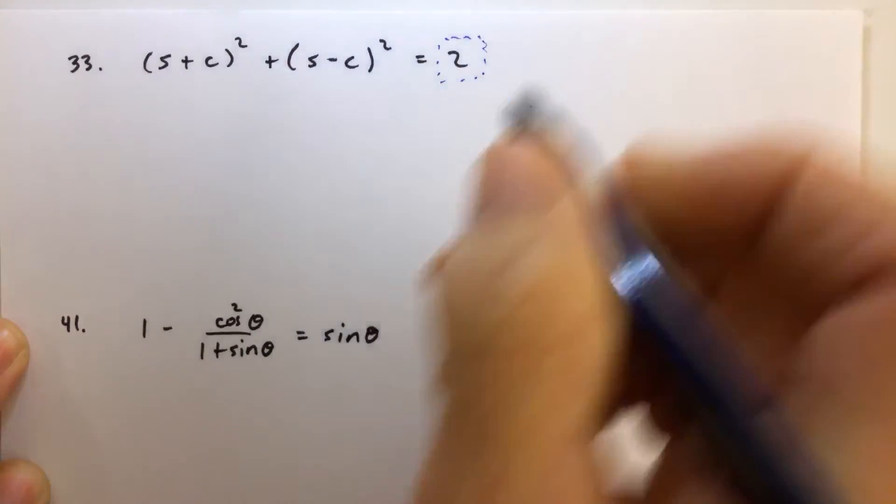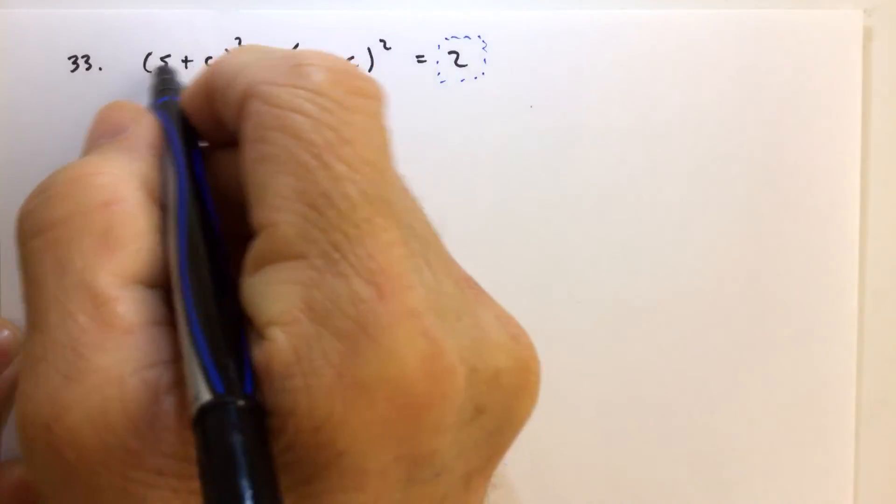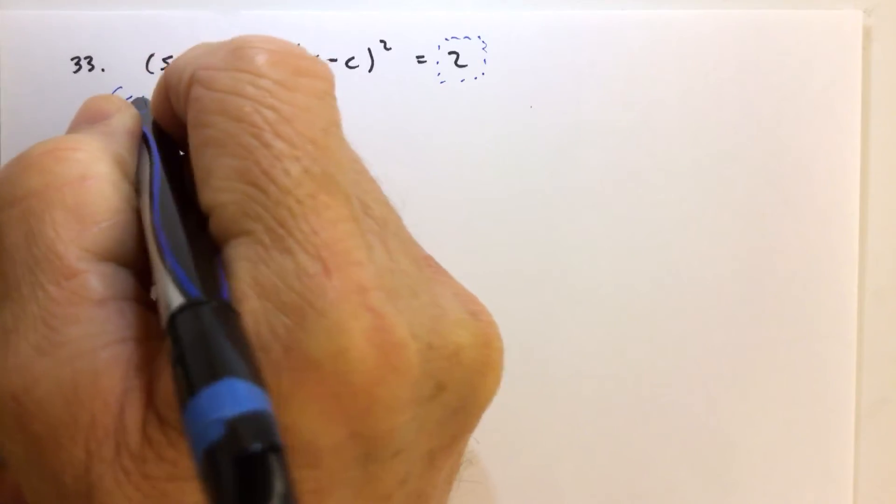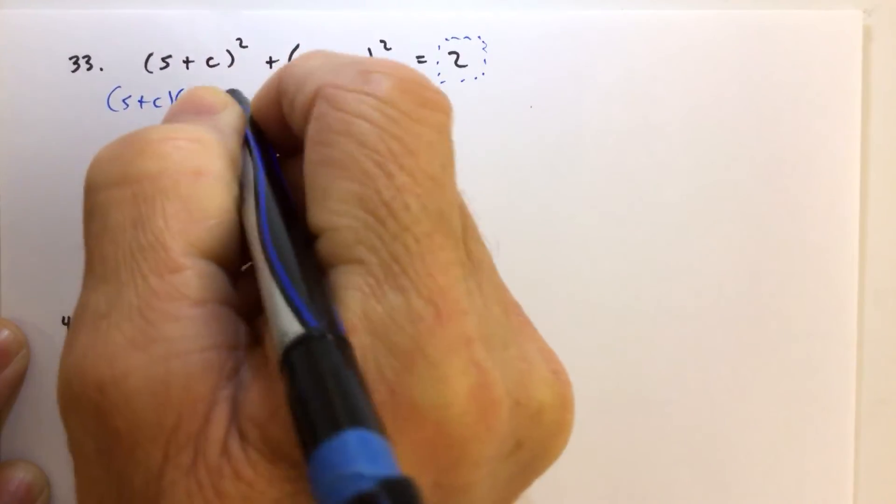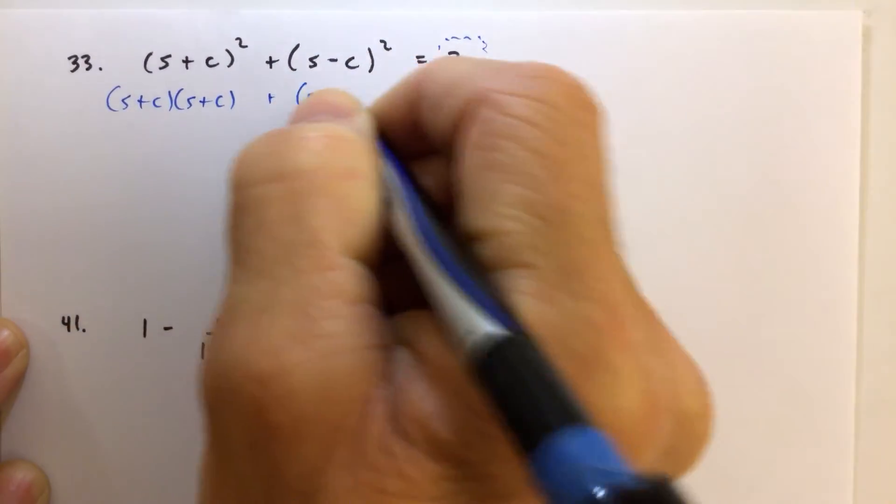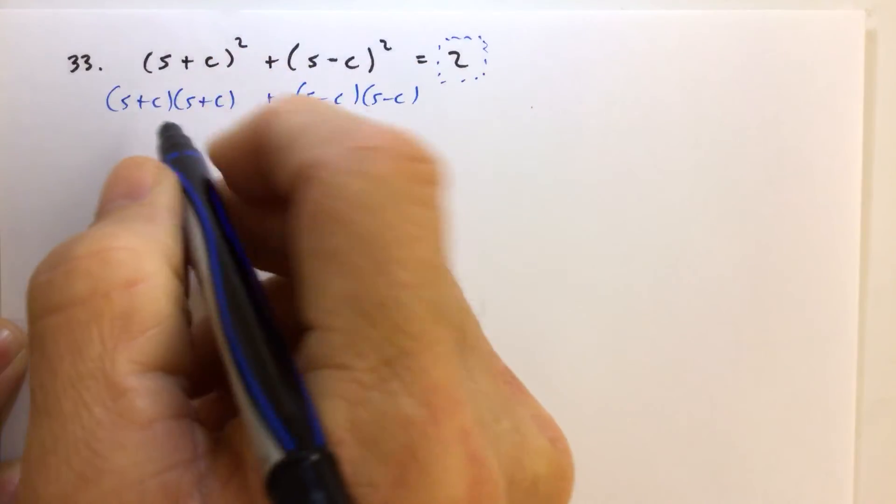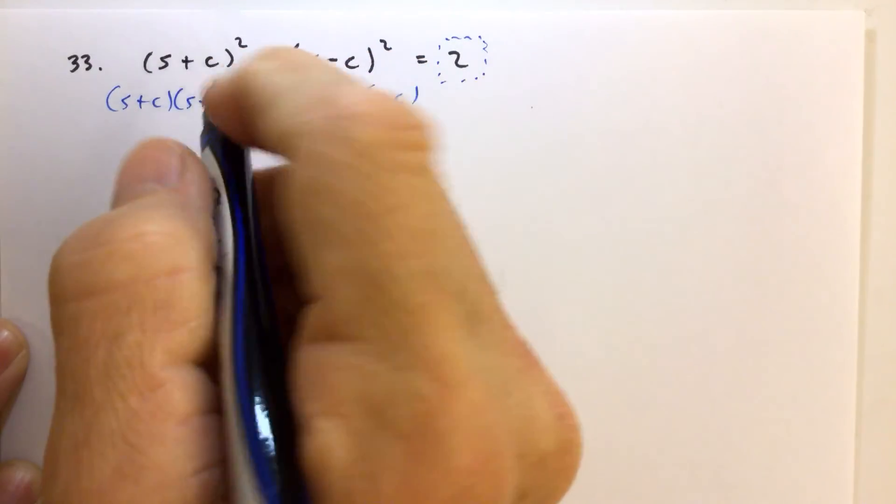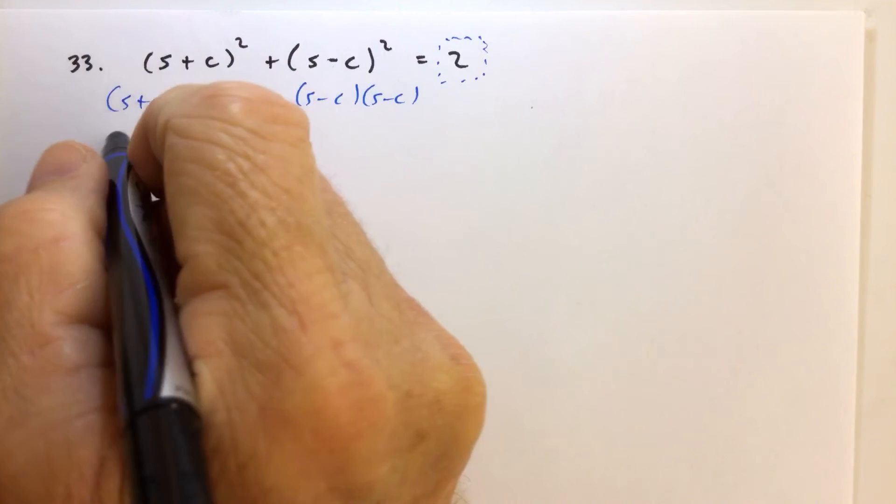So let's see if we can make it look like 2. When we square a binomial, let's write it out so it's easier to see. And again, squaring a binomial, it's not just s squared plus c squared. So don't get in that bad habit.